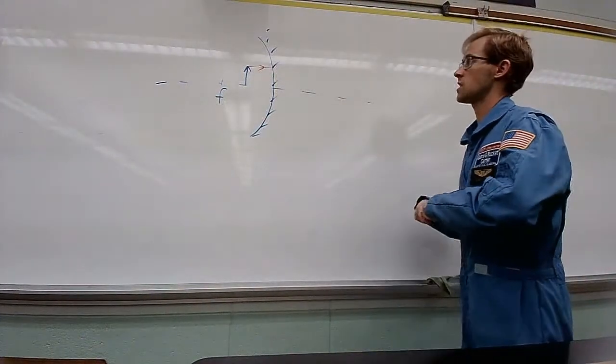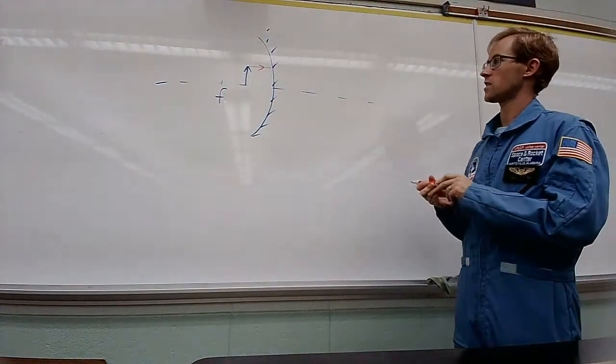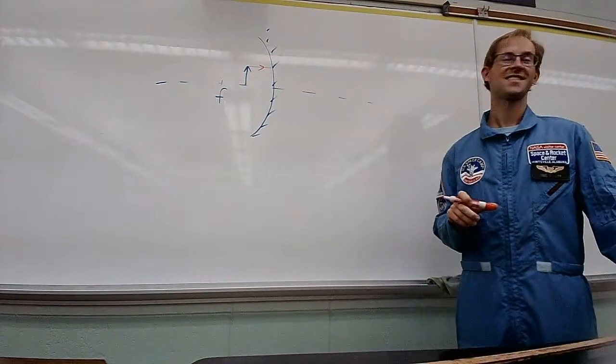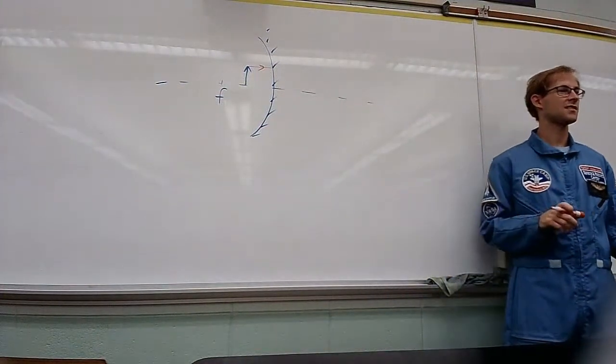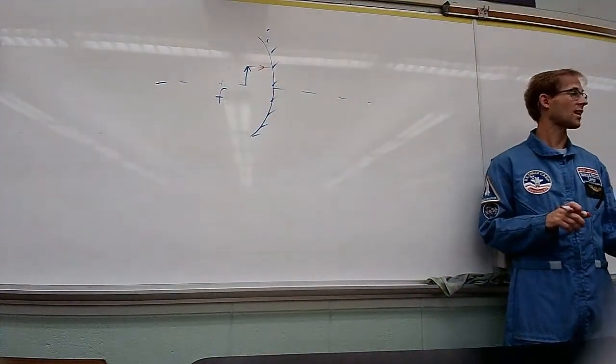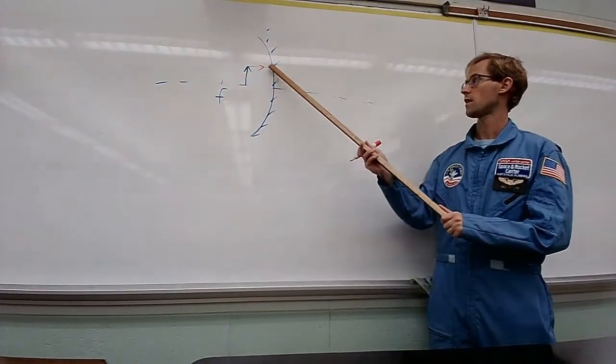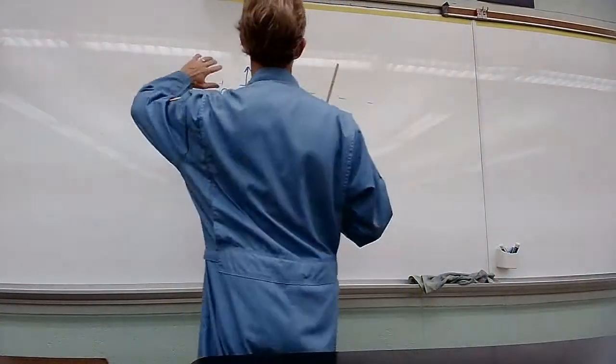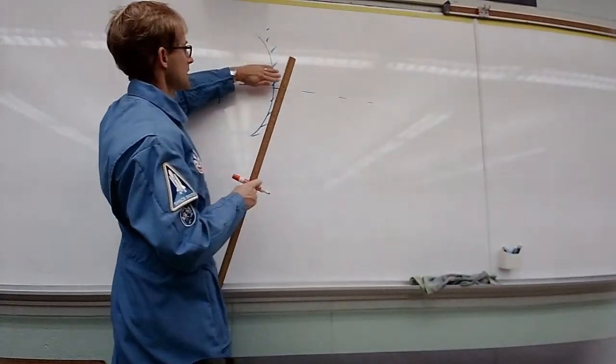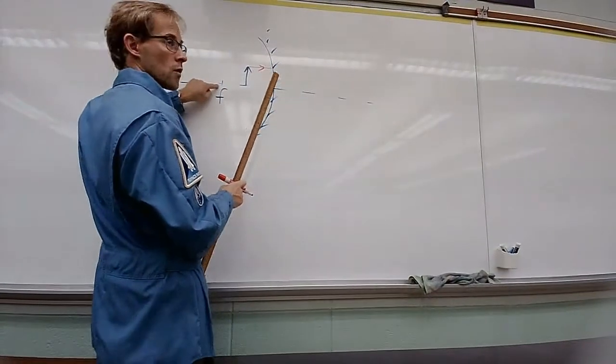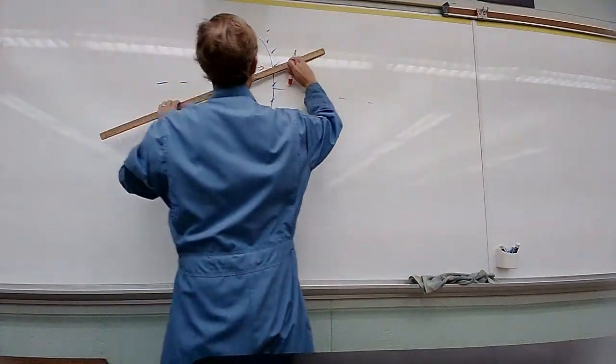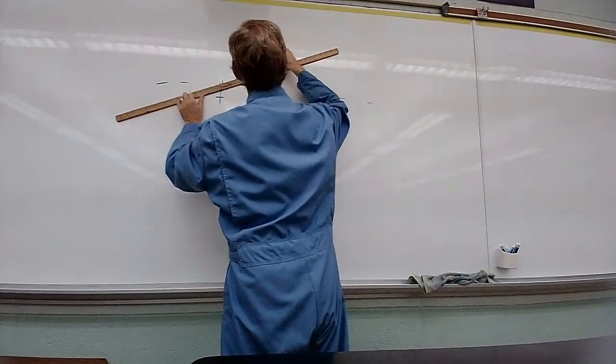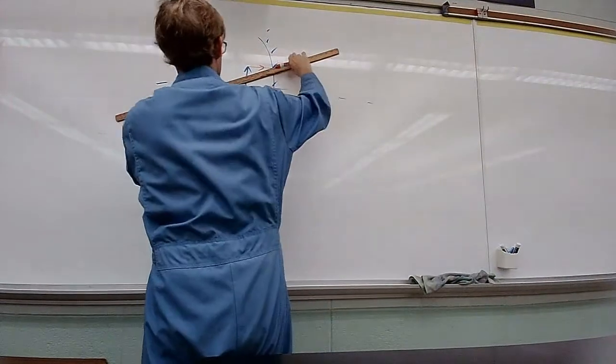So the light ray comes in parallel, and then it hits the mirror. Where's that light ray going to go to next? Focal point. Because it's coming in parallel, it's going to hit the mirror and go through the focal point. This is a converging mirror. It takes light rays that are going in like this, and then it converges them to a point. And that point would be the focal point.